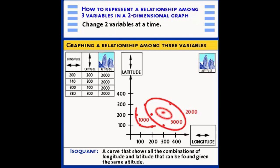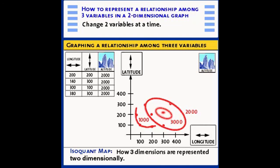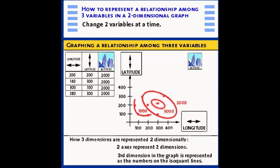This is the way an economist represents three dimensions in a two-dimensional graph. We use the two axes to represent two of our dimensions, in this case, east and west and north and south. And we use the third dimension in the graph, and we represent the third dimension in the graph as the numbers on the isoquant lines. Later, we'll be using this tool to represent consumer preferences, as well as the trade-off between factors of production in the making of goods and services.